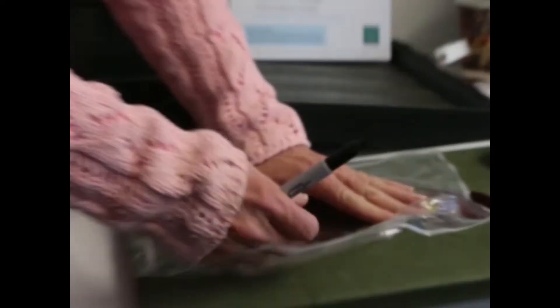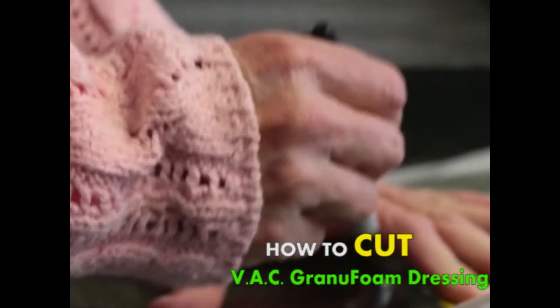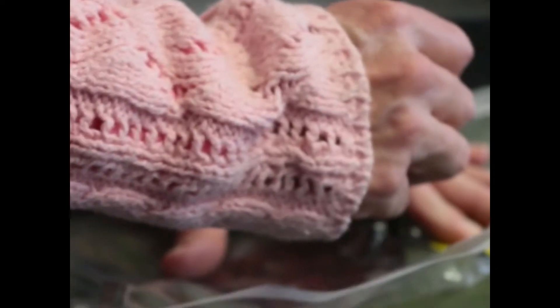So when you take it out, you remove that and you set this on top of the wound. And then you trace it because you don't want it to go beyond the wound edges, right?